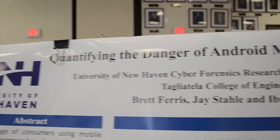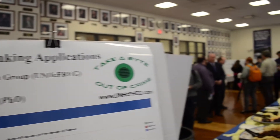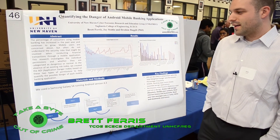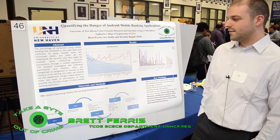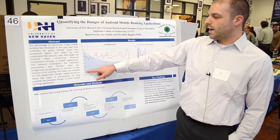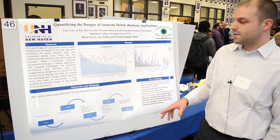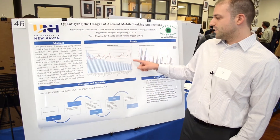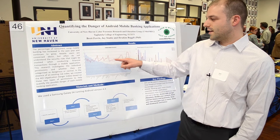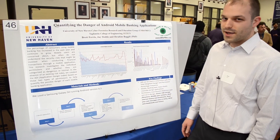Our research was on the dangers of mobile banking applications. What we did was we came up with an index that rated your banking application based on its permissions. We gave it a weighted total based on dangerous permissions and normal permissions, and then the average gives us our ADI — our index — which tells you on a scale of one to five how dangerous your banking application is.